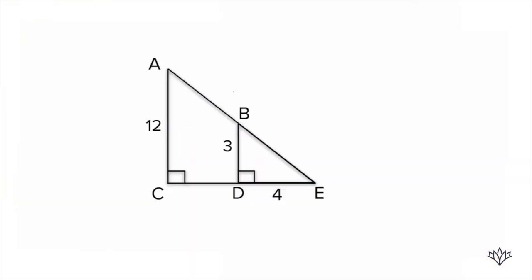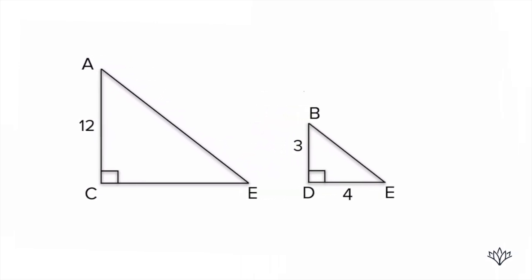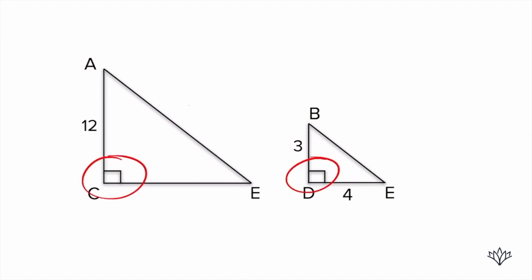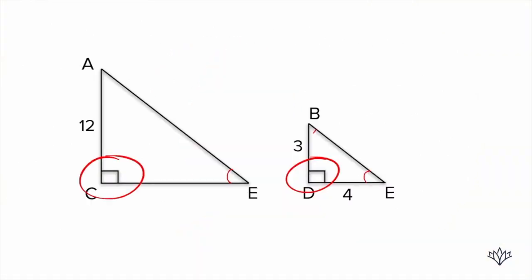Two triangles are similar if their angles are equal to each other. Let's take the small triangle and pull it out to make this more clear: triangle ACE and triangle BDE. They both have a 90-degree angle. Looking at the original diagram, angle AEC is the same as angle BED — they share that angle. As a result, if two angles are the same, the third angle has to be the same in each triangle, because all angles sum to 180 degrees. So we know we have two similar triangles.